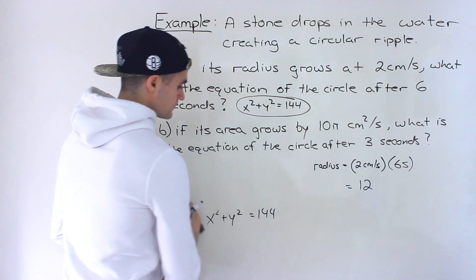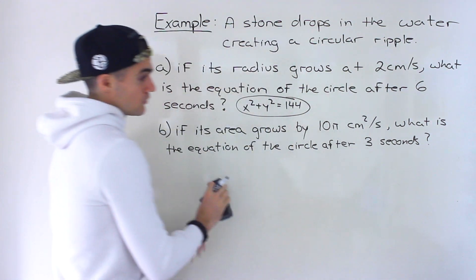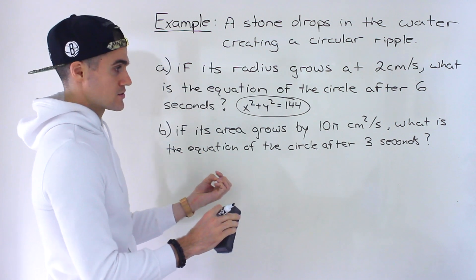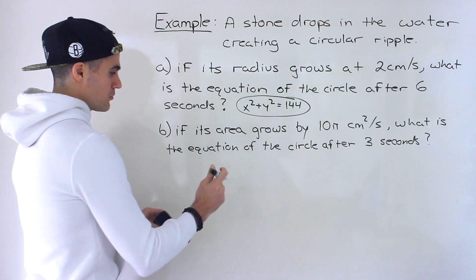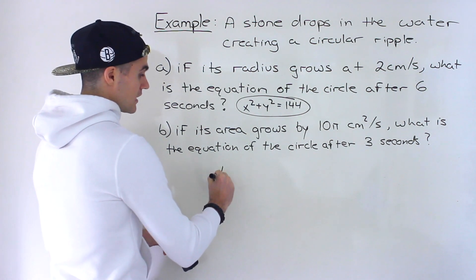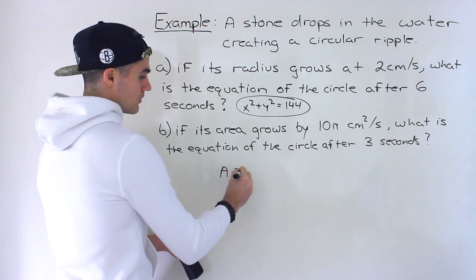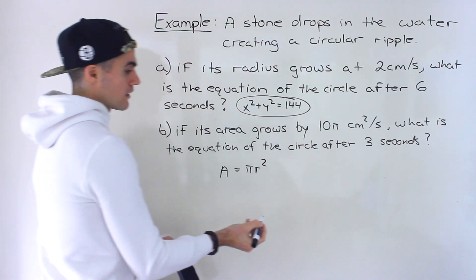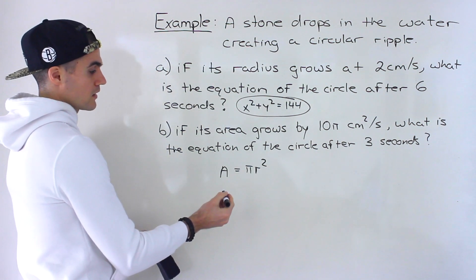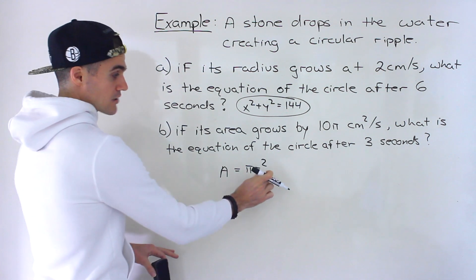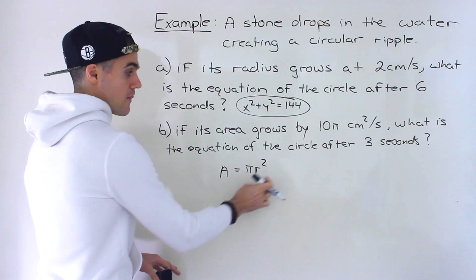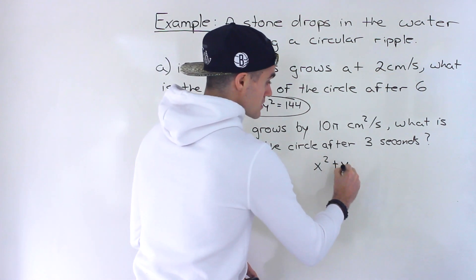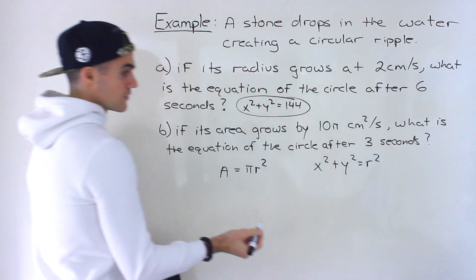Now for Part B, we're not directly told how much the radius is growing — we're told how much the area of the circle is growing. So there's a preliminary step to finding the radius. Recall that the area of a circle is πr². We'll need to solve for the radius within the area formula first, and then plug it into the circle equation.